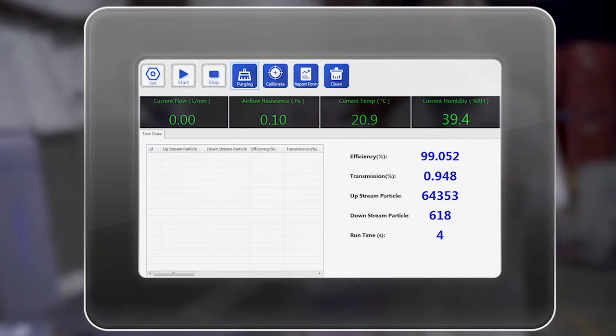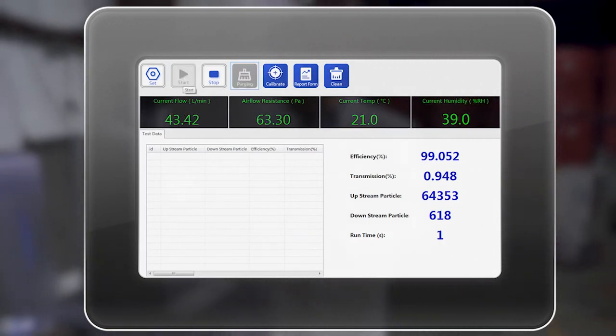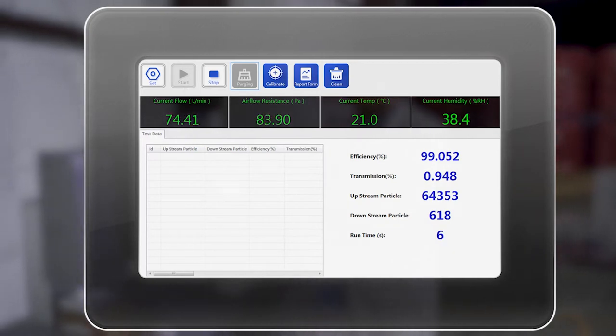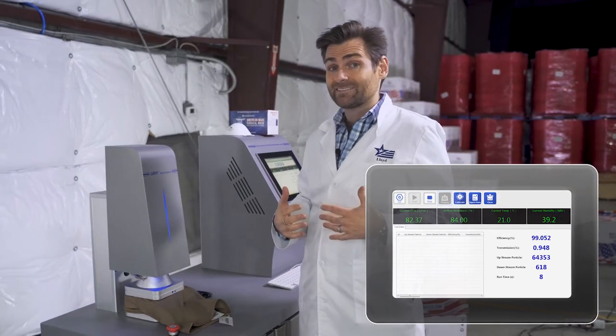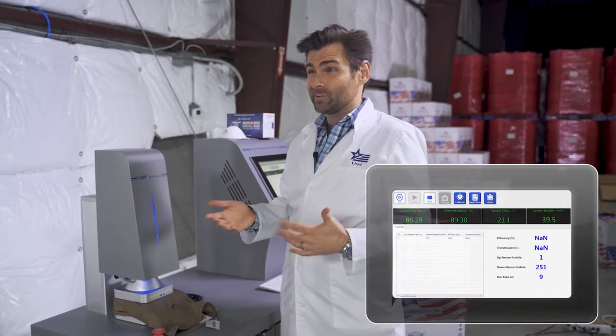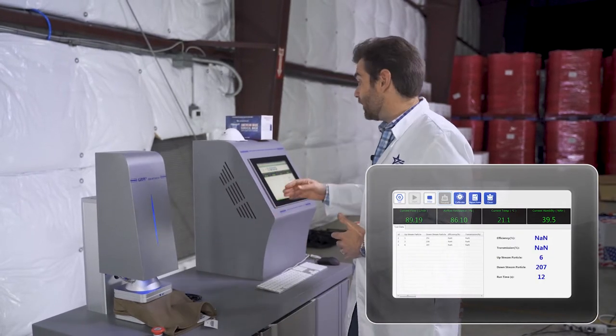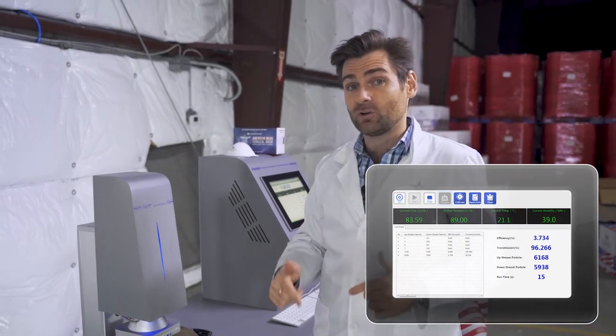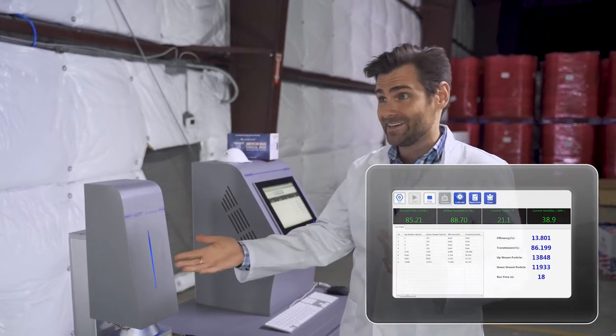Okay. So the machine is warming up. We've seen these before, that's what happens in this process. And then it's going to start reading numbers. So typically neck gaiters in the past have tested about nine or 10%, a surgical mask that's made in the US and ASTM level two or level three surgical mask is going to test at 98, 99%.